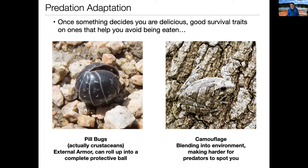We see that kind of trait all over. Those of you from the American Southwest — armadillos do the same thing. On the right you see another trait: camouflage. Lots of creatures have discovered camouflage, and it's always adapted to the local environment the life form finds itself in. This is a camouflage frog — you can see it sitting against the background and it blends in quite well. That makes it basically harder for predators to find you.